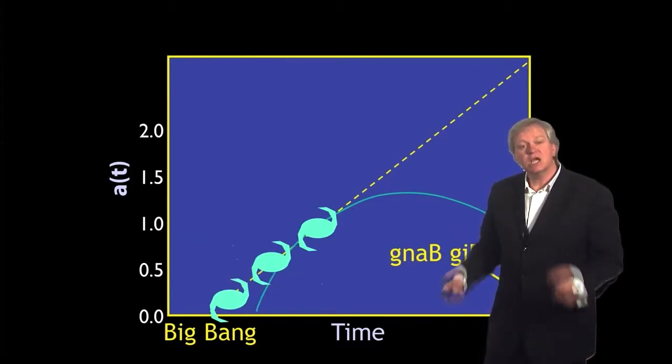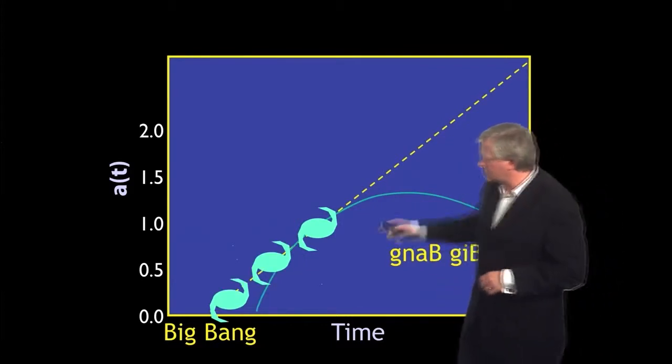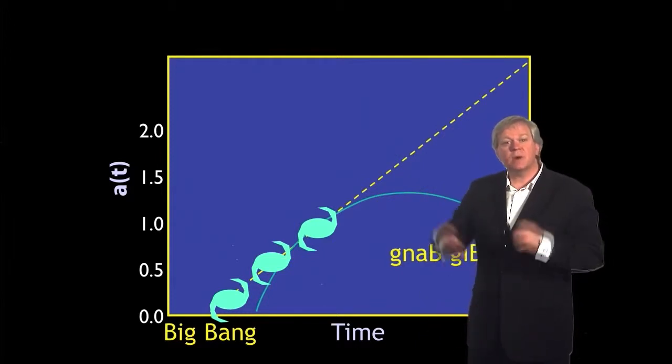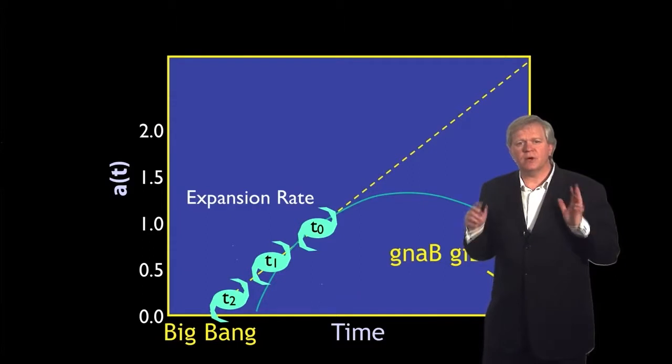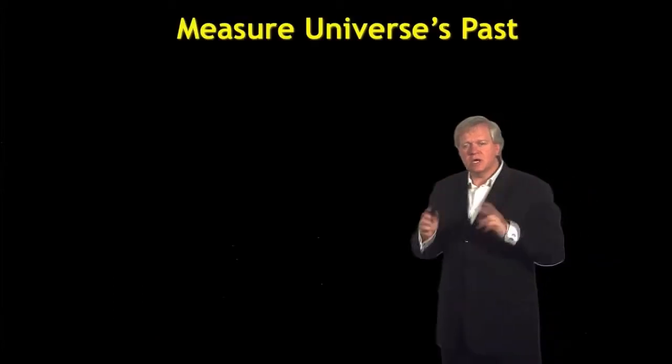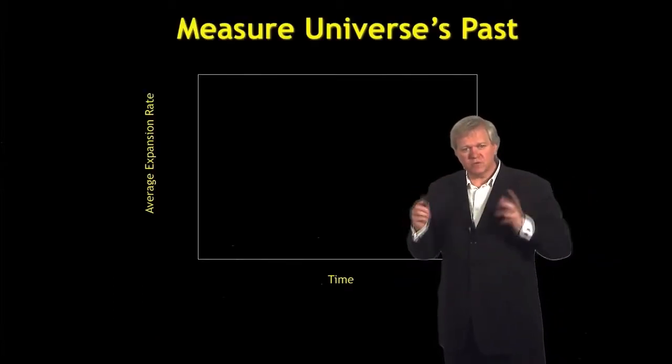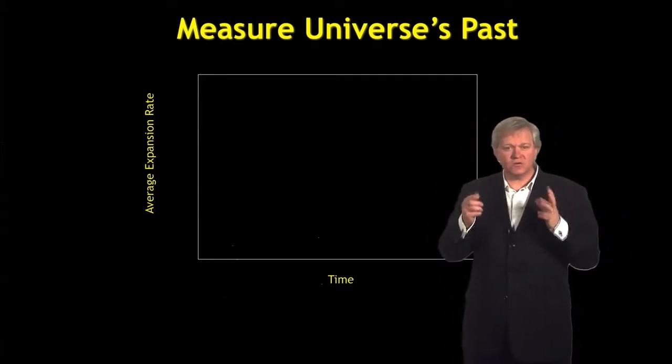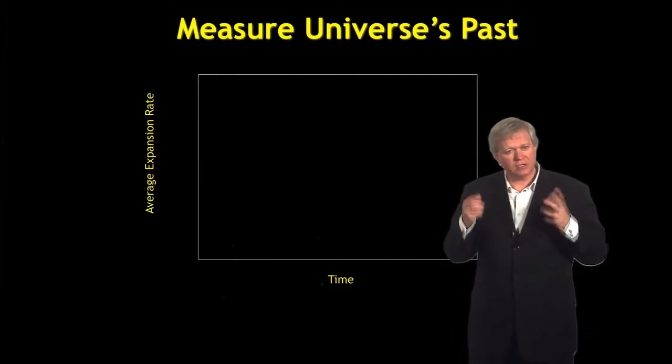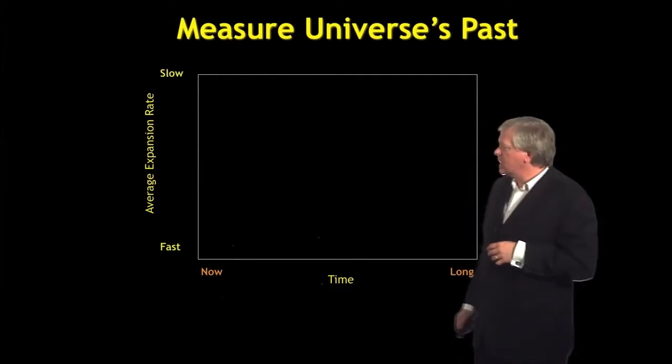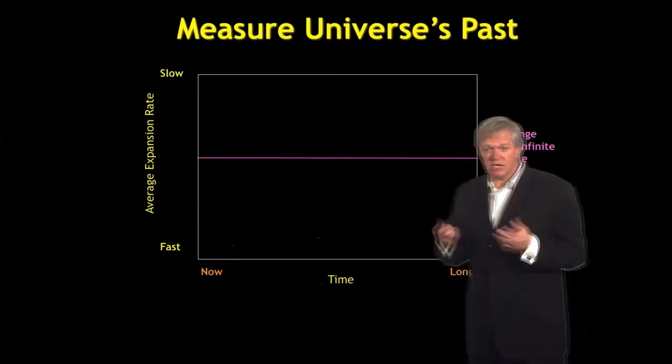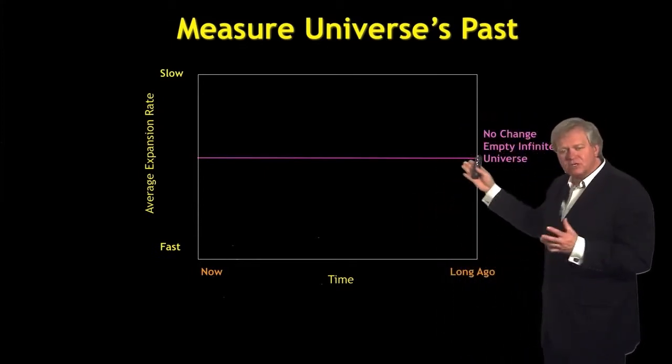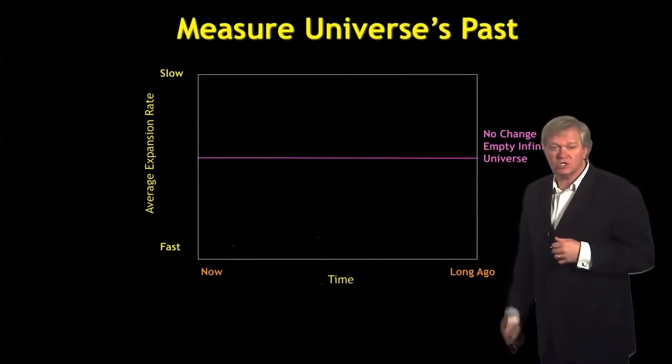And you get a slightly different distance and scale factor relation in the past if the universe is going to keep on expanding forever. Another way to think about it is looking through and measuring the universe's past expansion rate. You measure how fast the universe is expanding now, we call that the Hubble constant. If the universe is just coasting with almost nothing in it, then the expansion rate isn't going to change over time.